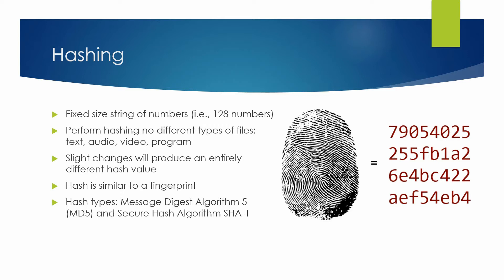A hashing function can take any file, such as a text, audio, video, program, etc., and produce a unique hash based on that file. The resulting hash is a string of numbers unique to that file. Even a small change in the file will produce an entirely different hash value.